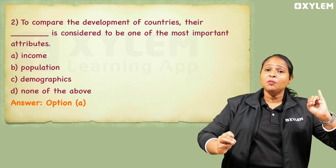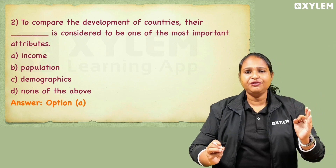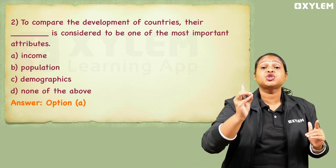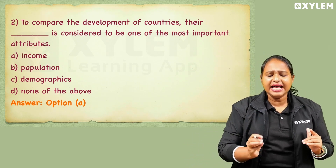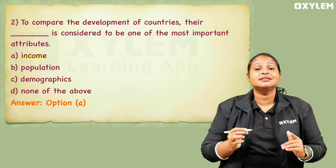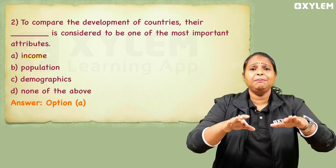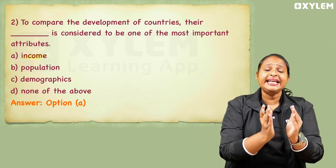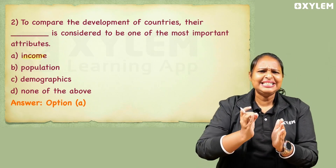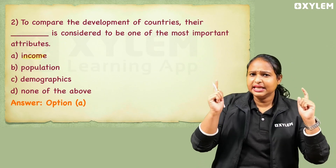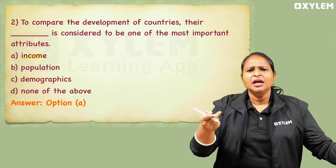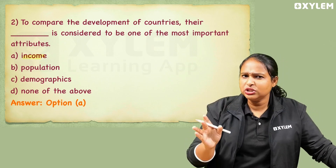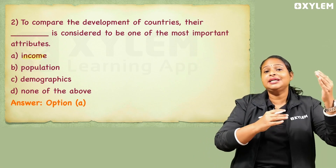Because income, population, and demographics — it is still about the most important attributes. Option A is income. If we discussed the development class in one country, demographics and population are of course important, but it is important to know how much income it is.